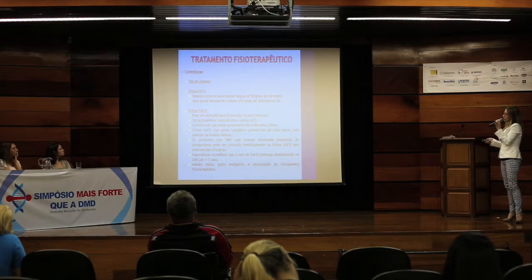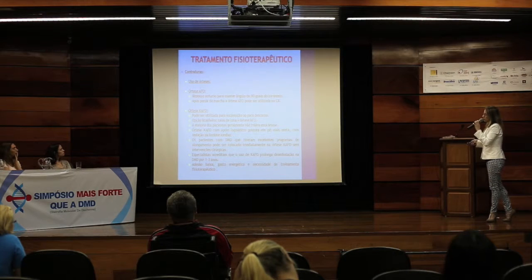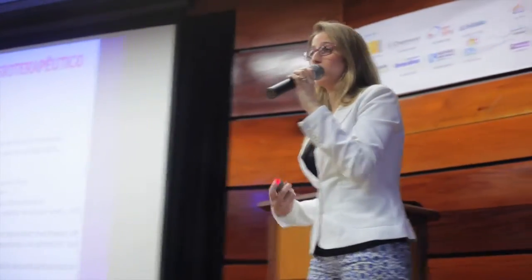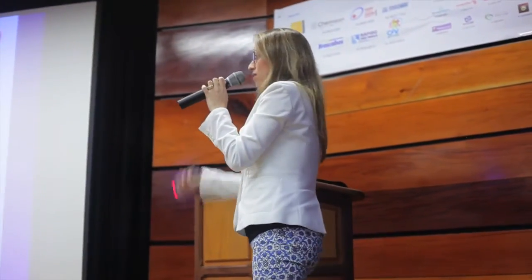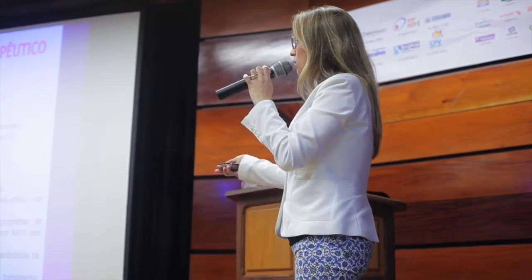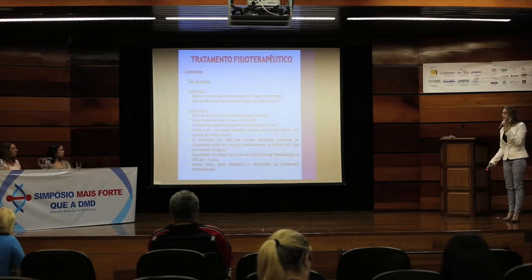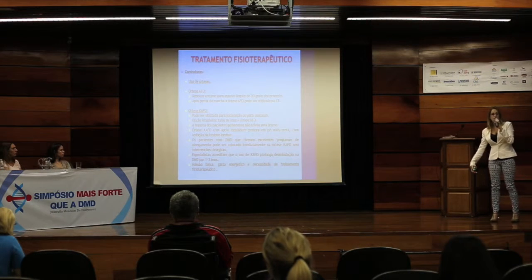As órteses também têm muitas diferenças na literatura em relação ao uso. A órtese de alongamento que a gente usa mais é a AFO a 90 graus, que também pode ser usada para marcha. Temos a KAFO, que é menos utilizada no Brasil — acredito muito mais por falta de acesso a ela. Muitas vezes a gente usa a tala de lona mais a AFO para fazer o alongamento de toda a cadeia, dos isquiotibiais e tríceps sural.